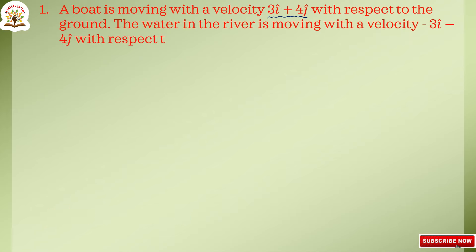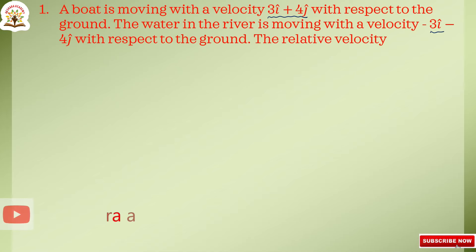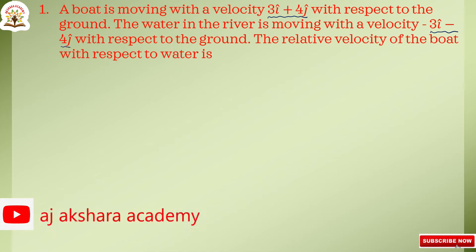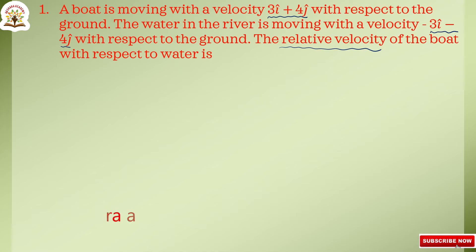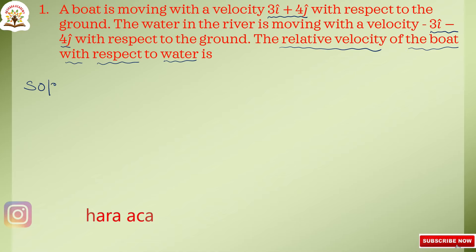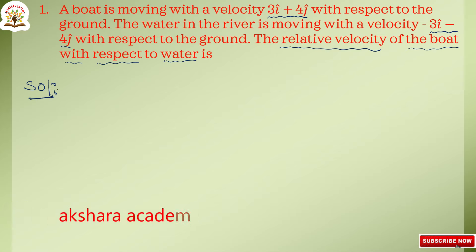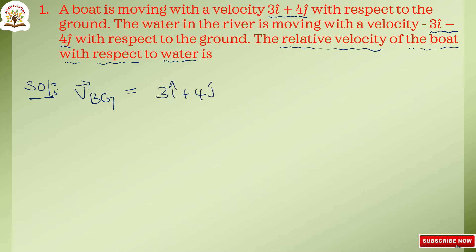The water in the river is moving with a velocity minus 3i cap minus 4j cap with respect to the ground. The relative velocity of the boat with respect to water is to be calculated. Here, velocity of boat with respect to ground VBG is equal to 3i cap plus 4j cap.